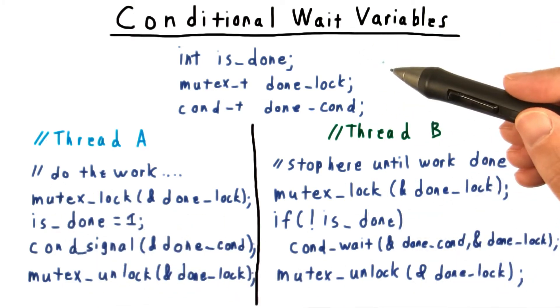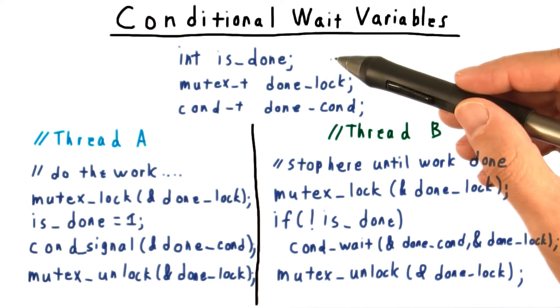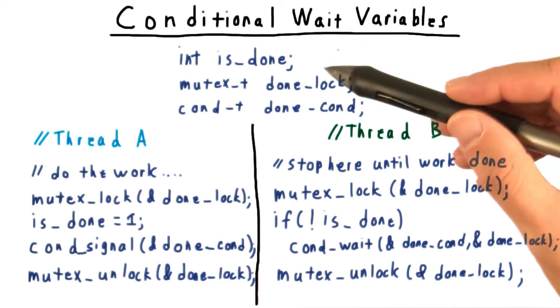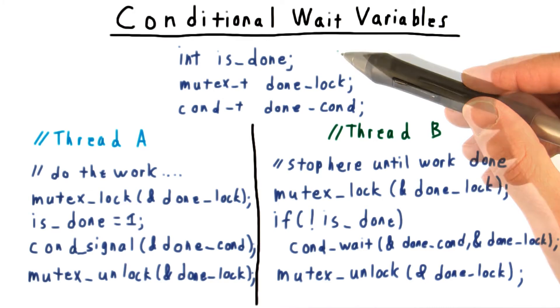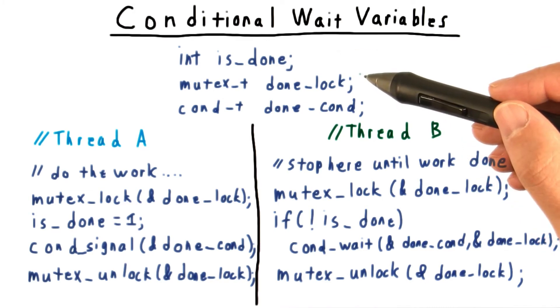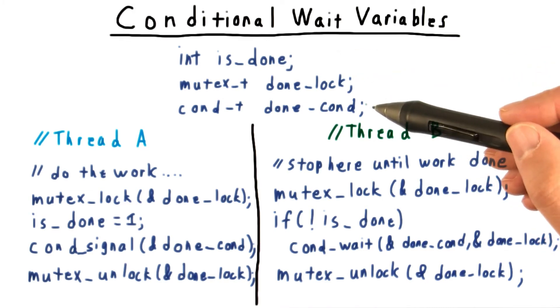Now to use a conditional wait variable, we need three things: a variable indicating whether the work is done or some other condition that can be tested in memory, a lock that we can apply to this variable, and a special conditional wait variable.